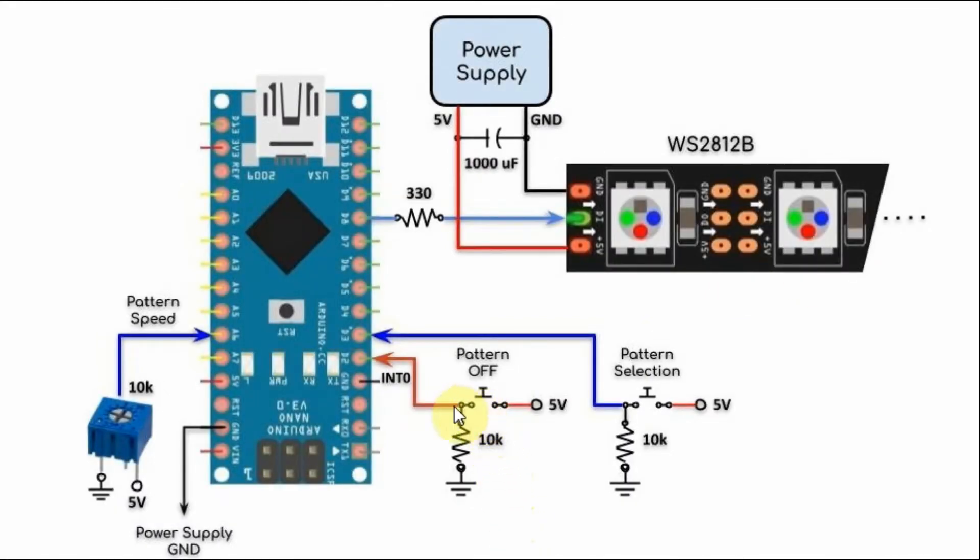This second push button is connected to interrupt pin 0 of the Arduino and it is used to turn off the pattern.